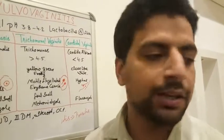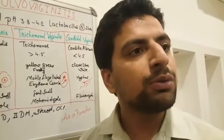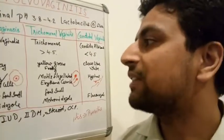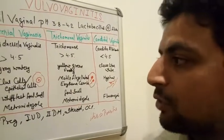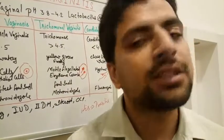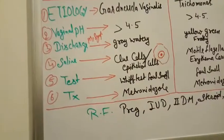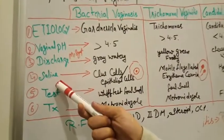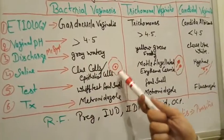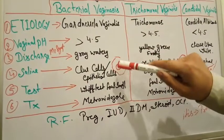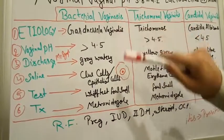Dr. Sandhya, in bacterial vaginosis what kind of cells do we see? Clue cells — yes, you are right. In bacterial vaginosis on a smear we see clue cells, which are epithelial cells covered with bacteria.